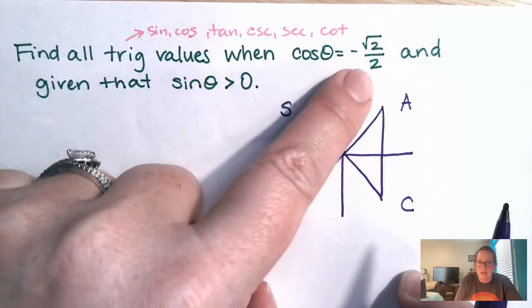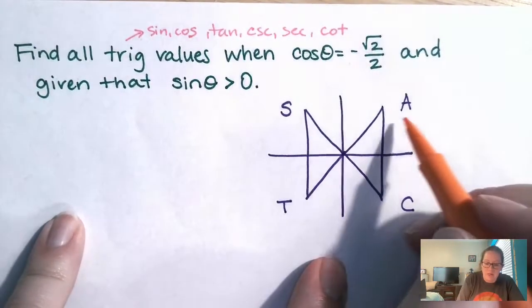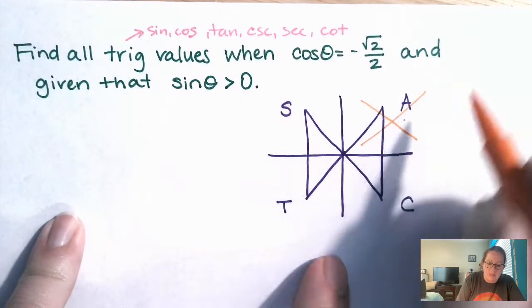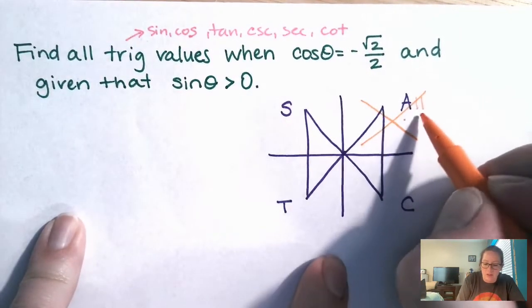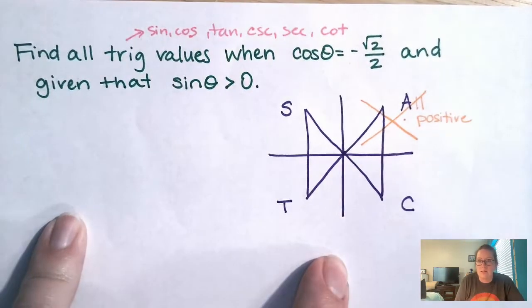But cosine is negative. So if cosine is negative, it can't be positive, right? So it can't be in this guy. Because we said all trigs are positive here. Well, if it's negative, it ain't positive. So let's cross it out.